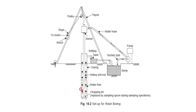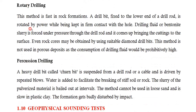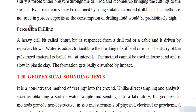Wash boring gives disturbed soil samples because water content, particle size, and minerals are all disturbed. However, it is useful to identify different soil strata — for example, to determine how deep black cotton soil extends, and what lies below it. Rotary drilling and percussion drilling are two methods for getting rock samples. Rotary drilling uses a rotating drill bit that advances into the ground. Percussion drilling uses a chisel bit that continuously vibrates and strikes the rock, breaking it into pieces that are brought to the lab.